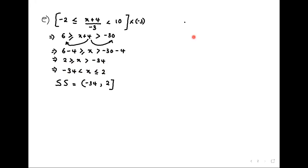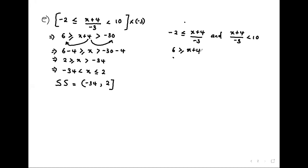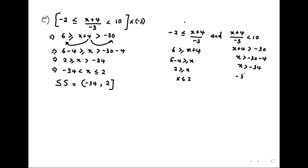You can separate the compound inequality: negative 2 ≤ (x+4) over negative 3, and (x+4) over negative 3 < 10. Cross-multiplying the first gives 6 ≥ x + 4, so x ≤ 2. Cross-multiplying the second gives x + 4 > negative 30, so x > negative 34, which is the same as negative 34 < x.